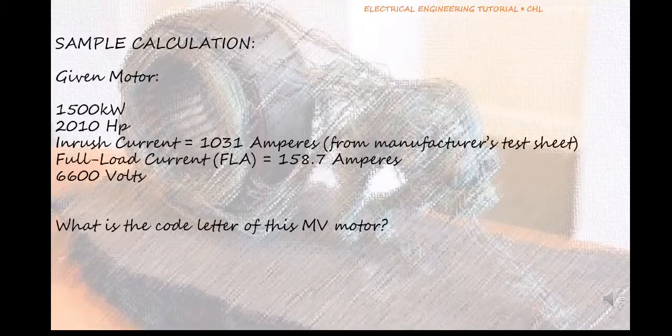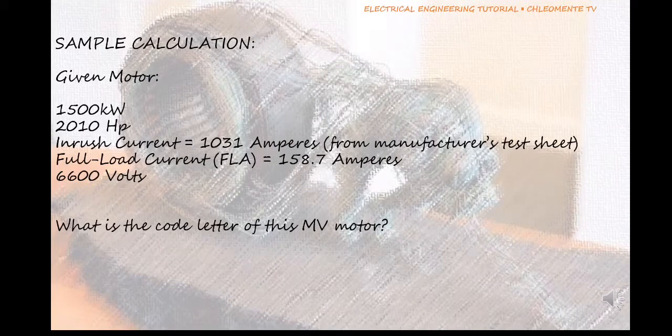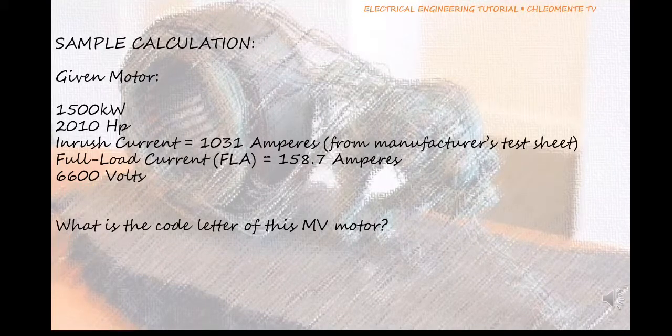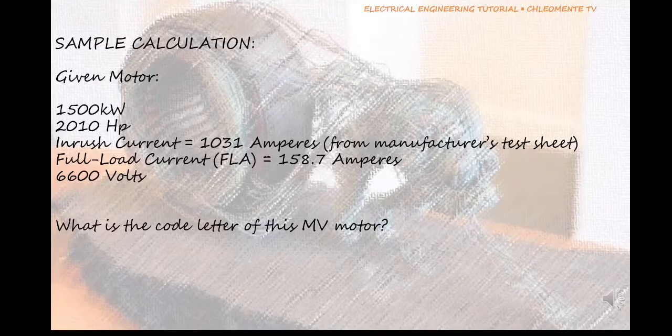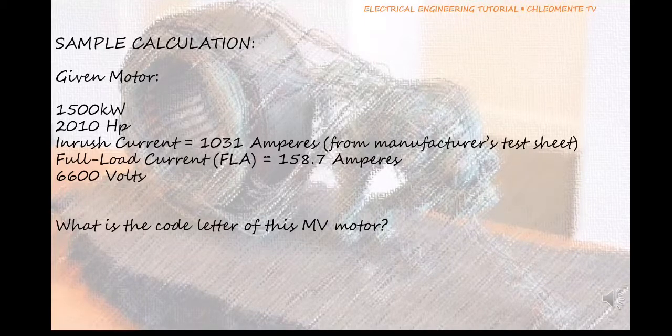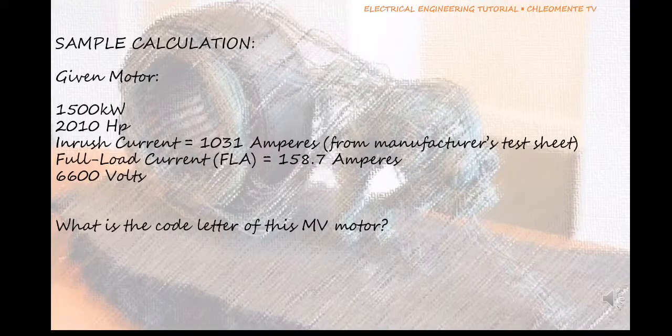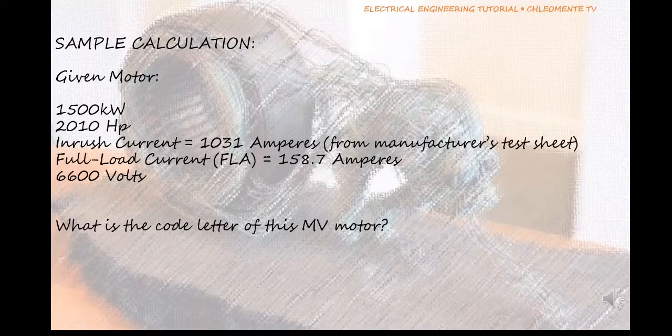Now let's go with a sample calculation. With the given data we will determine the code letter of the given motor. 1500 kW and 2010 horsepower are the motor nameplate power ratings. Inrush current of 1031 amperes is obtained from the manufacturer's test sheet. Full load current of the motor is 158.7 amperes. Rated voltage of 6600 volts or 6.6 kilovolts.